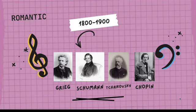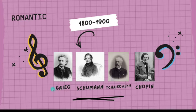The Romantic era is from 1800 to 1900. Some notable composers include Edvard Grieg, who composed the Peer Gynt Suite, including this movement, In the Hall of the Mountain King.